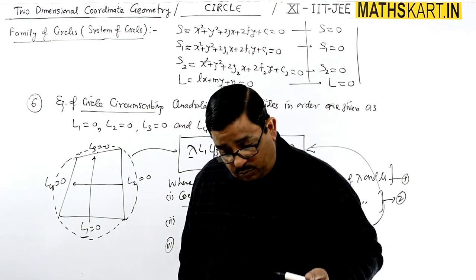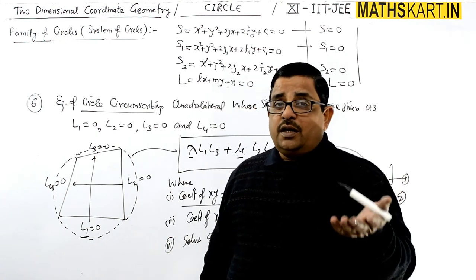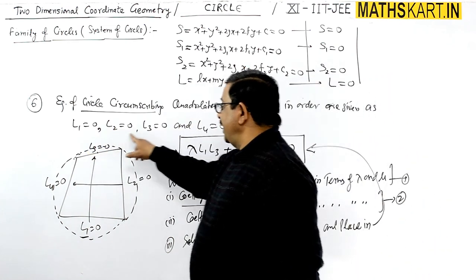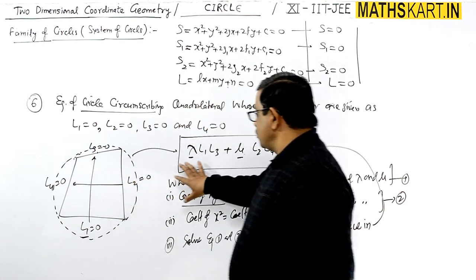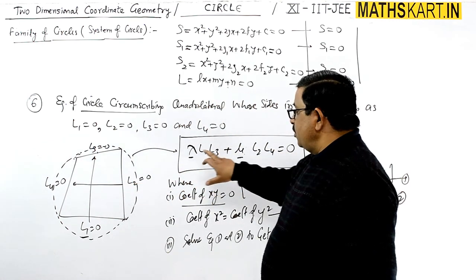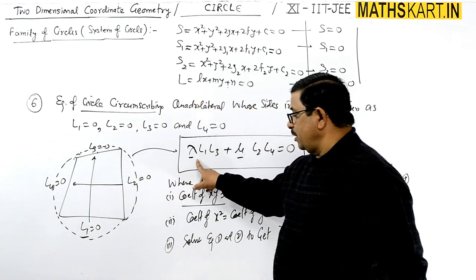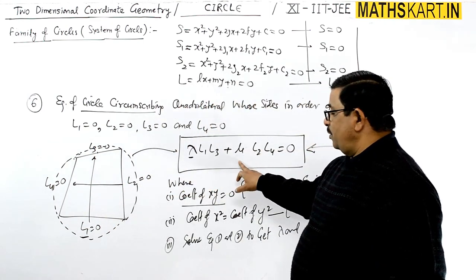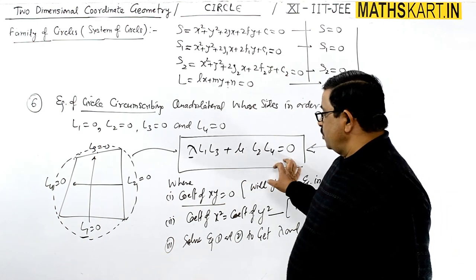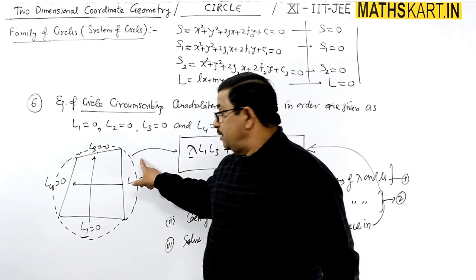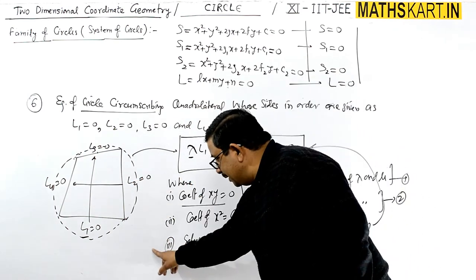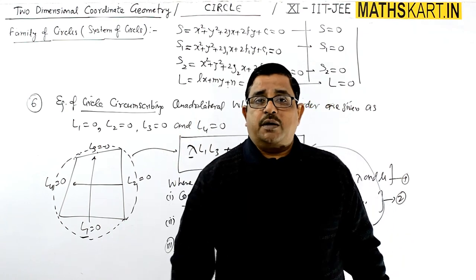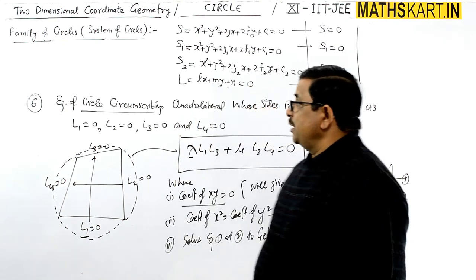This is the short trick. Such types of questions can be given. You directly write the equation: for a quadrilateral, four lines are given. Write them in order — take first and third together with coefficient λ, and second and fourth together with coefficient μ. Once λ and μ are found, the circle is obtained.